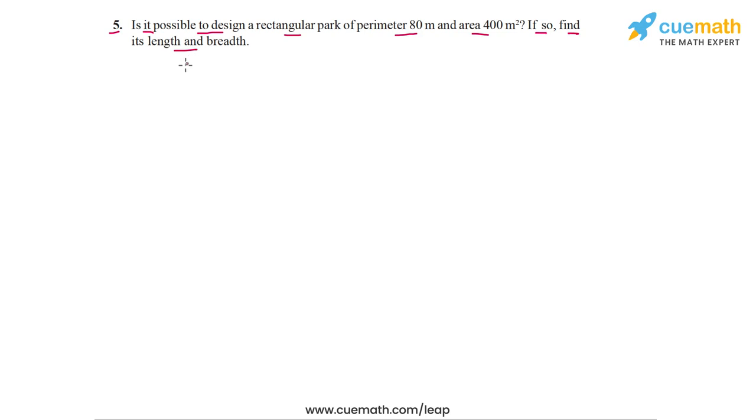In question 5 of this exercise, the problem statement says: is it possible to design a rectangular park of perimeter 80 meters and area 400 meters square? If so, find its length and breadth. So we have to figure out whether we can have a rectangular region with a perimeter of 80 meters and an area of 400 meters square, and if that's possible, find the length and breadth.